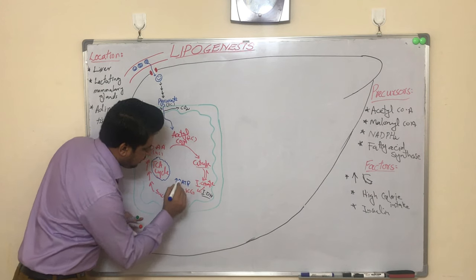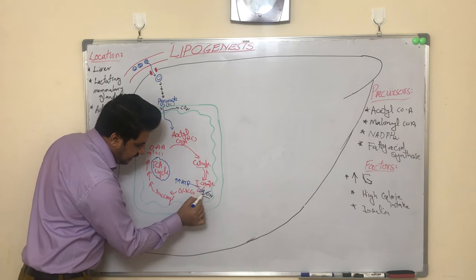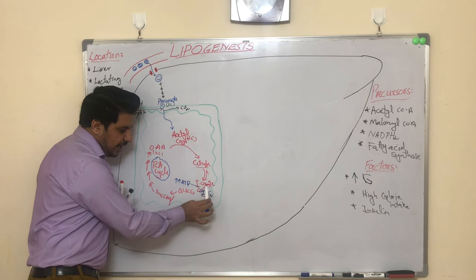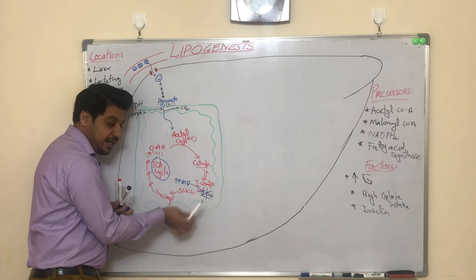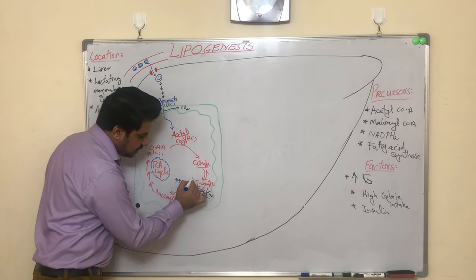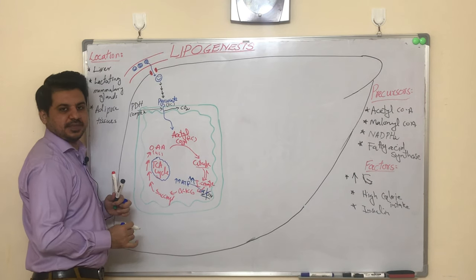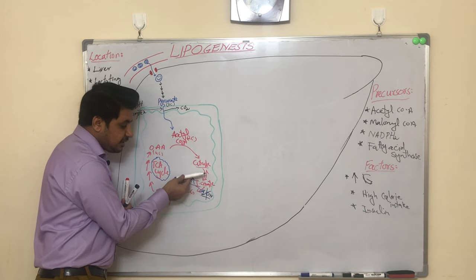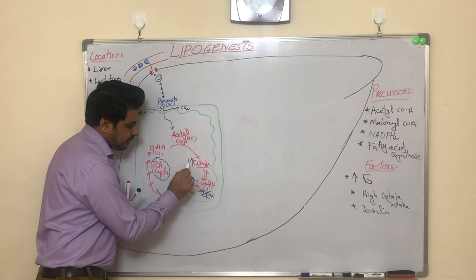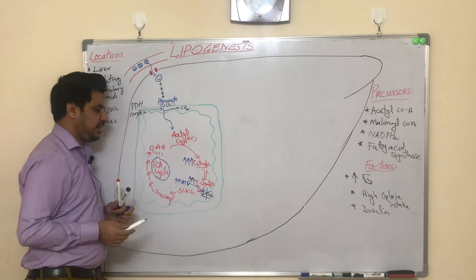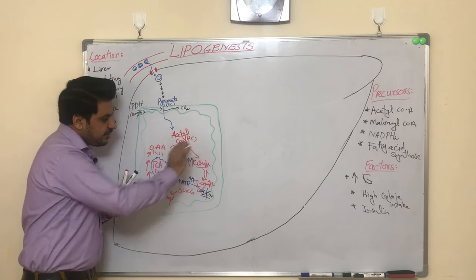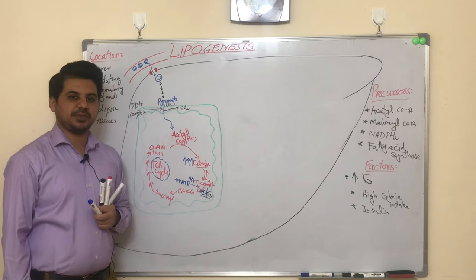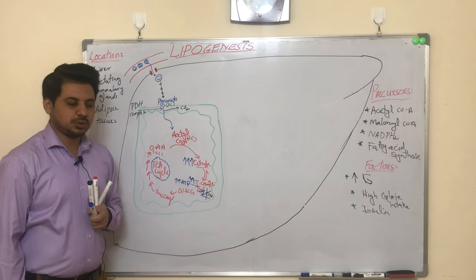When ATP levels rise enough, ATP inhibits the enzyme isocitrate dehydrogenase. When isocitrate dehydrogenase is inhibited, isocitrate cannot be converted into alpha-ketoglutarate. As a result, isocitrate levels rise. Since this is a reversible reaction, elevated isocitrate starts converting back into citrate, causing citrate levels to rise.